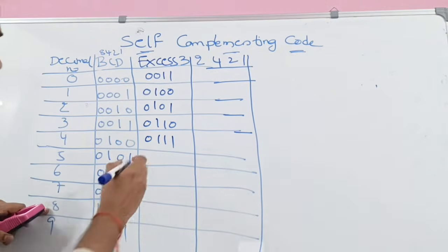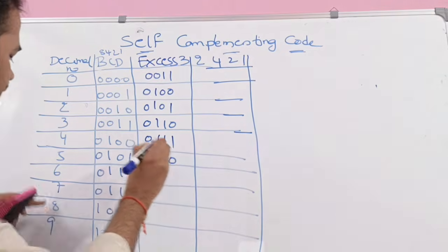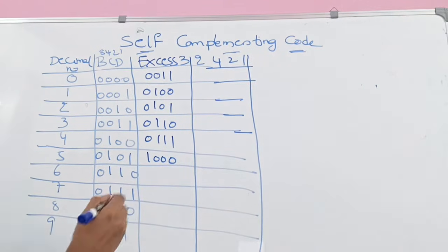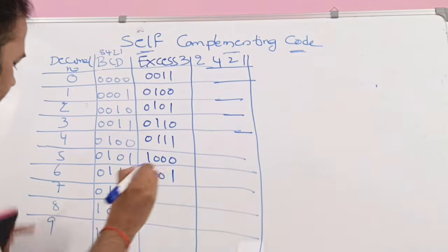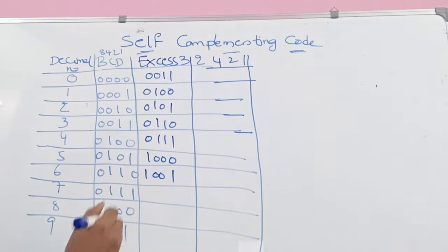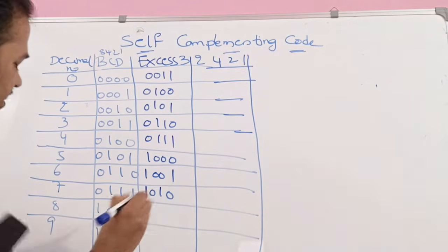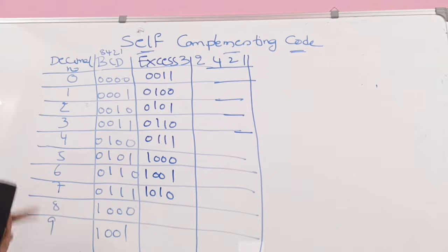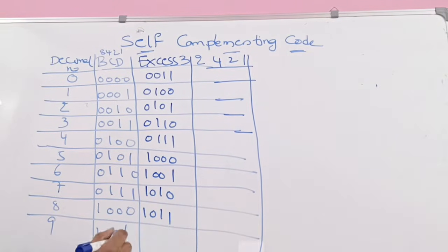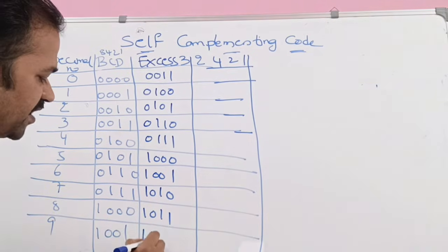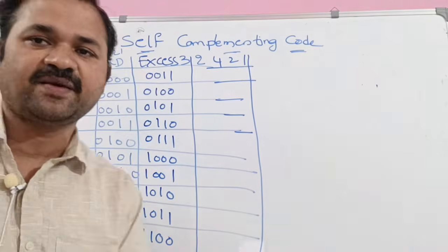For 5, 5 plus 3 equals 8, so 8 means 1000. For 6, 6 plus 3 equals 9, so 9 means 1001. For 7, 7 plus 3 equals 10, so 10 means 1010. For 8, 8 plus 3 equals 11, so 11 means 1011. For 9, 9 plus 3 equals 12, so 12 means 1100.